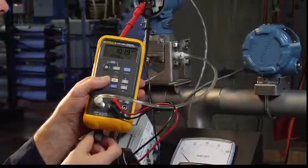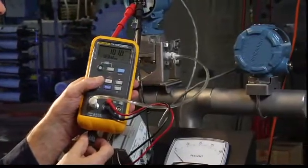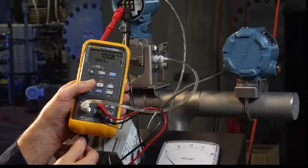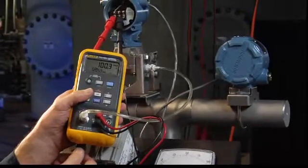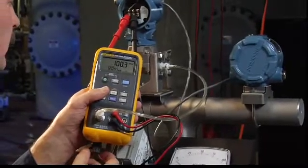In this demonstration we're going to test the Rosemount 3051 pressure transmitter with an input range of 0 to 200 inches of water while verifying the milliamp output range of 4 to 20 milliamps.